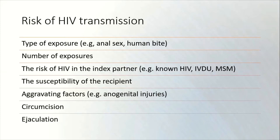The number of exposures is also relevant. Are we considering PEP in the context of a gang rape, sexual assault incident, or a chemsex party where there may have been multiple incidents of sexual exposure? Or was it a single episode of unprotected sexual intercourse with a known partner?